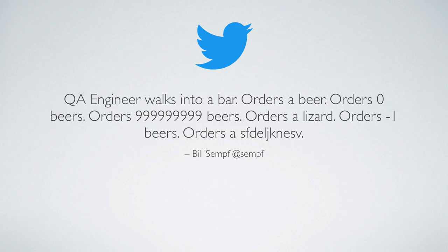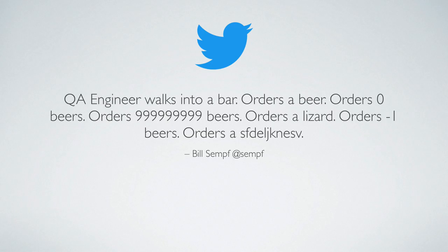This tweet is a great example to account for things both expected and unexpected. The QA engineer walks into a bar, orders a beer as expected — then orders zero beers, orders a lot of beers, orders a lizard, orders a negative quantity, and then just orders some gibberish. Going back to the happy path example: as we're developing a feature, we tend to think about how things should work. We put on our headphones, develop the feature, and don't often consider what happens when we get fuzzy input, or bad or unexpected data. This is why you hand your phone to someone else and your app crashes — because they did something you just flat out didn't expect.